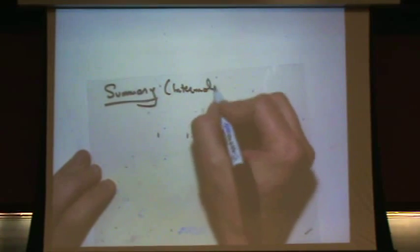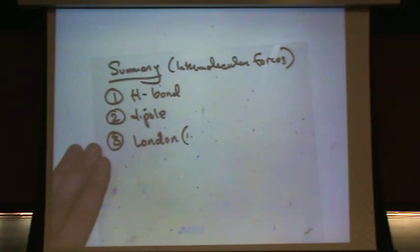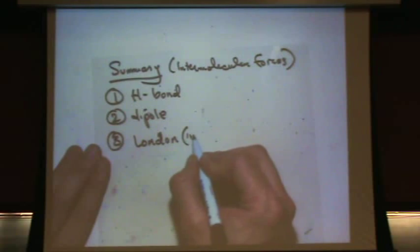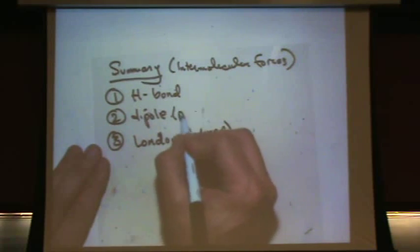So forces, let me do the summary first, and then we'll try some example problems. Here's the summary of intermolecular forces. There's three that you need to know: H-bonding, dipole, specifically permanent dipole, and London, which is also called dispersion or London dispersion. This is an induced or temporary or instantaneous dipole. The regular dipole is called permanent.